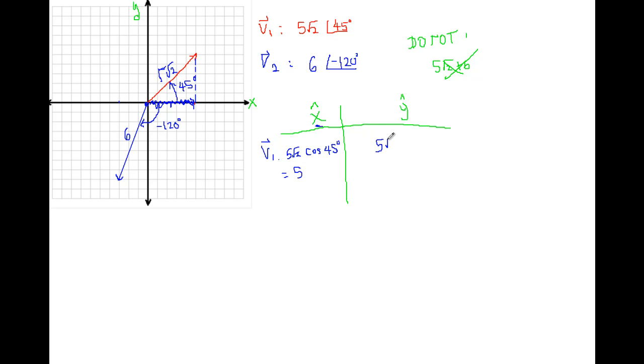Similarly for y components, it's sine 45 degrees. And when you push into your calculator, you'll see this is 5 units along y. So what we've done here is we're literally breaking down the components along each orthogonal direction, x and y.